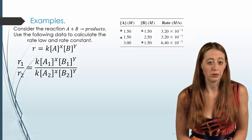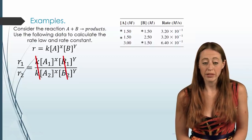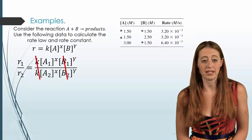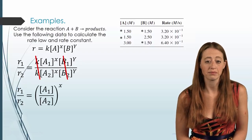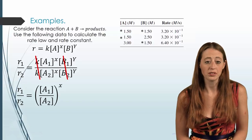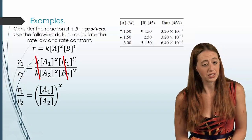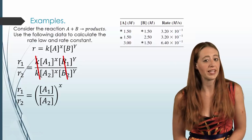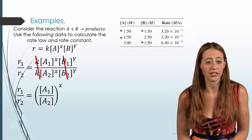So now let's look at what happens if I hold B constant. B would be the same number. K is going to be the same number, and that would cancel out. And so we end up with R1 over R2 equals the concentration of A1 over the concentration of A2 to some power. And we have all of those values except x, and so we can solve for that.